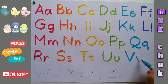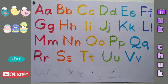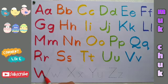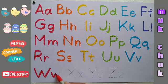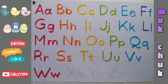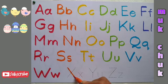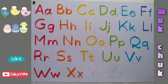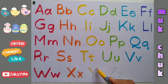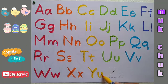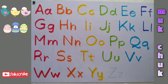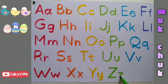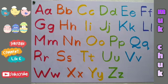V, capital V, small v. V for violin. W, capital W, small w. W for watch. X, capital X, small x. X for x-ray. Y, capital Y, small y. Y for yak. Z, capital Z, small z. Z for zebra.